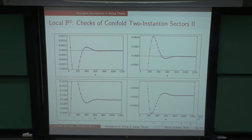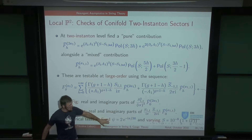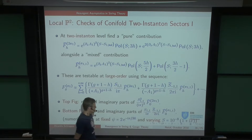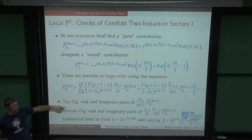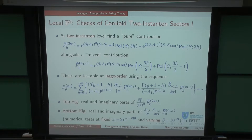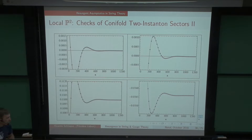At a fixed point in moduli space, varying the propagator S around its holomorphic value, the top plot tests the real and imaginary parts of the pure two-instanton sector — and that looks convincing. The bottom plot tests the real and imaginary parts of the (1,1) mixed sector — also convincing. You can play this game for a long time, and at some stage you're convinced that this trans-series is describing the full non-perturbative topological string on local P2.